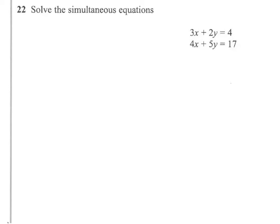With simultaneous equations, the first task is to try and get one of the letters the same. So I'm going to make the x's the same by multiplying the top equation by 4 and the bottom equation by 3.